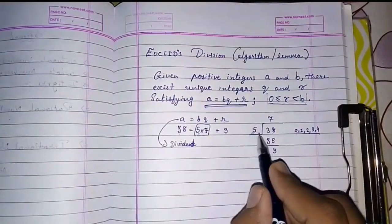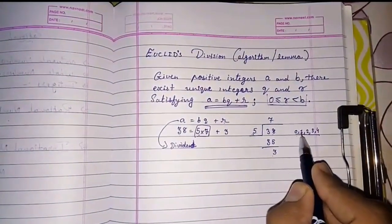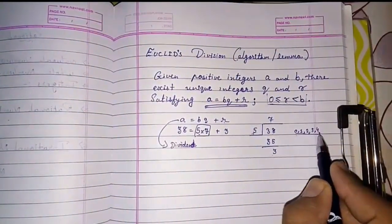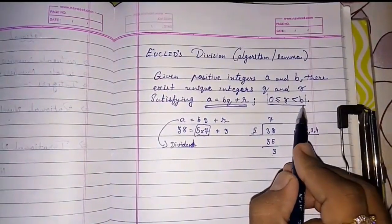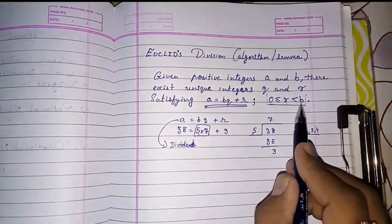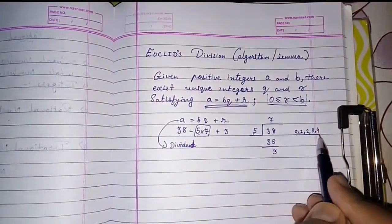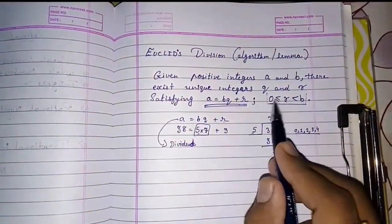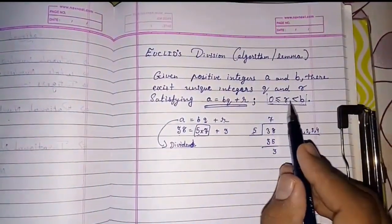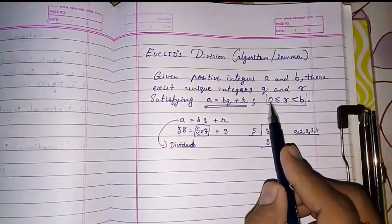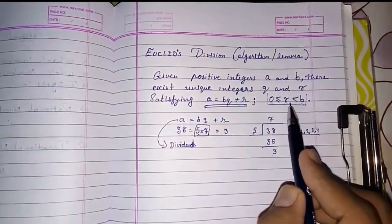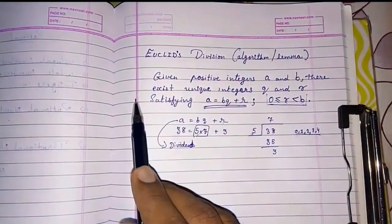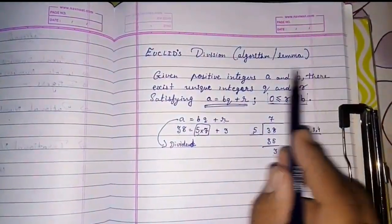If I want to write this I can write remainder 0, 1, 2, 3, 4 means less than b. 5 is less than b, that's less than 5. And these are the possible remainders. So they had written it is equal to or greater than 0 and less than b. This is Euclid's division algorithm.